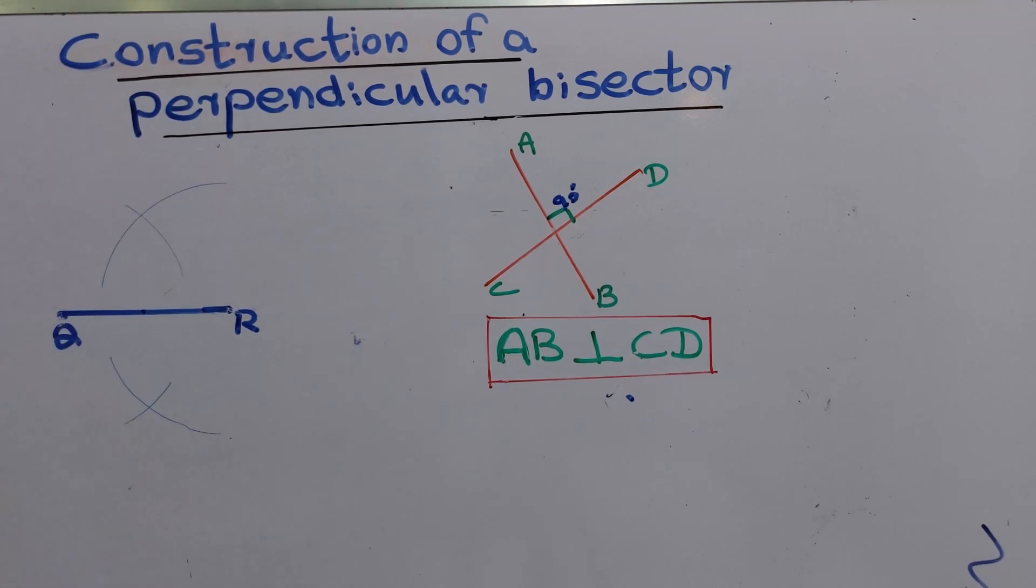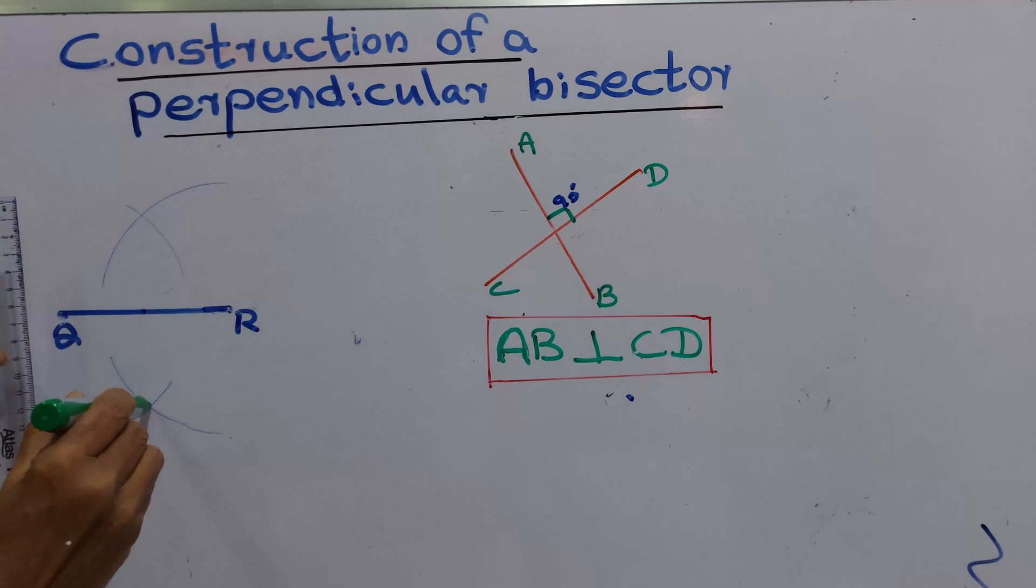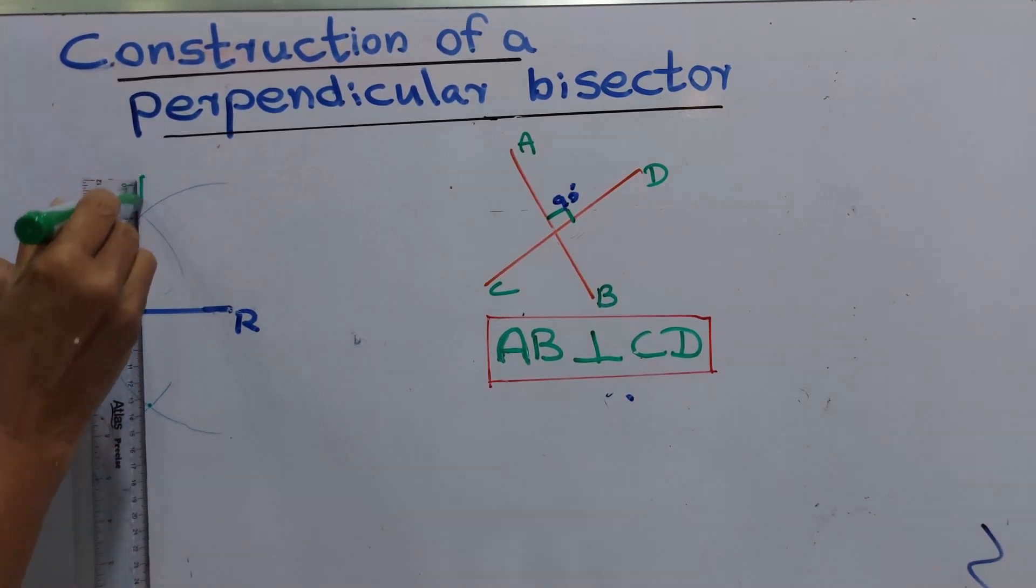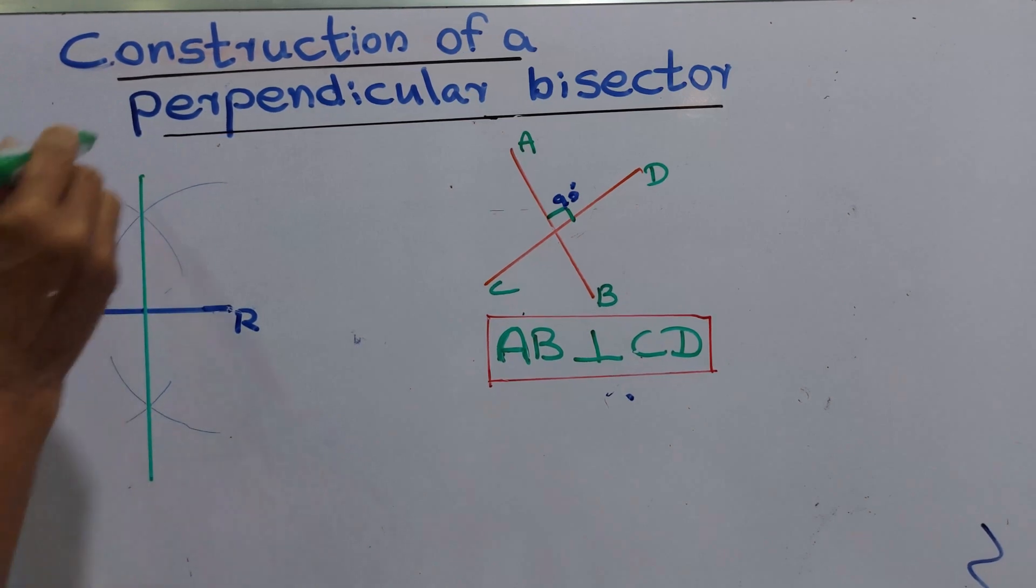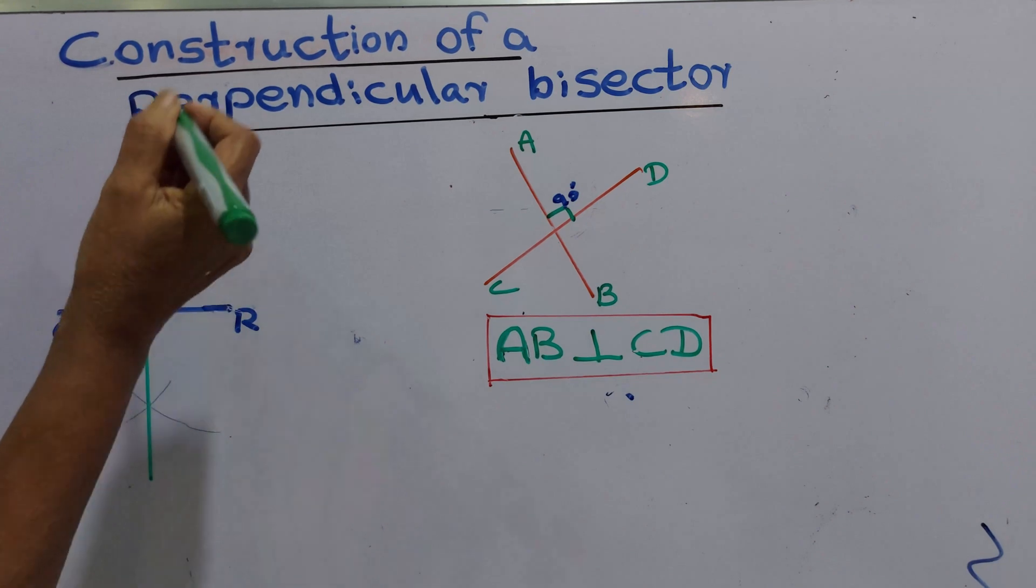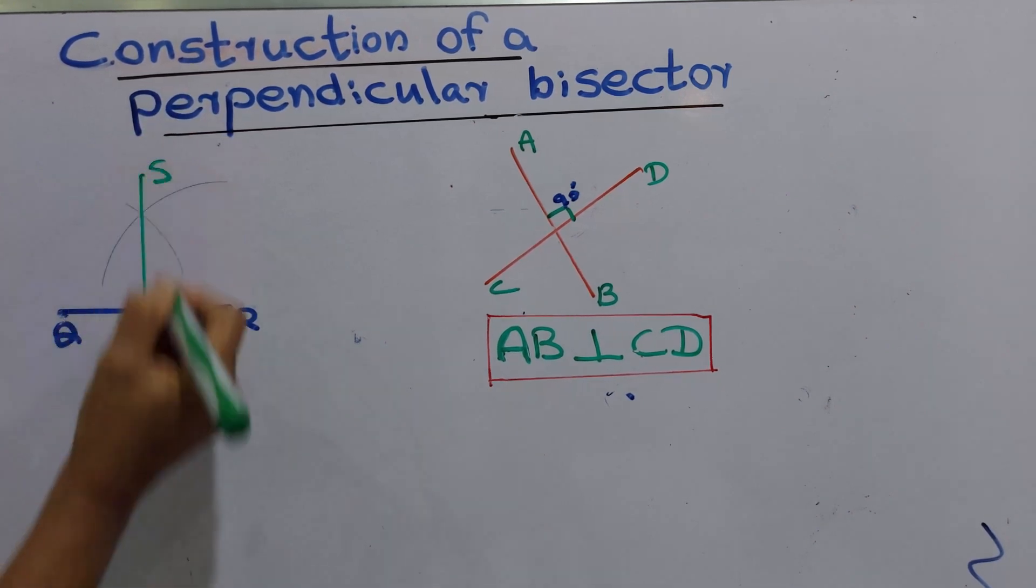Now we are going to join these two intersections here. We are going to join these two together. This is the perpendicular bisector. We can name this as ST.